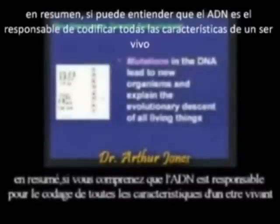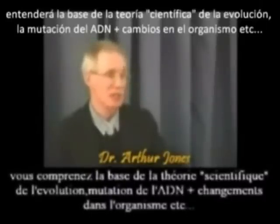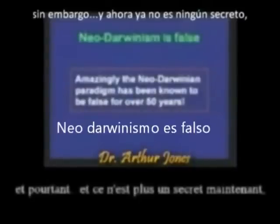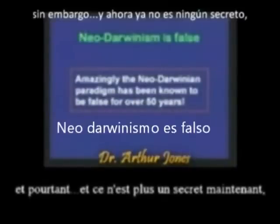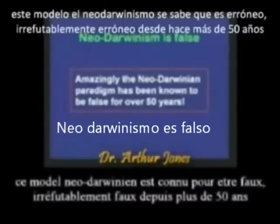Clearly, if you accept that DNA is responsible for coding all the characteristics of an organism — whether it's a recipe or a blueprint — then you've got the basis of a scientific theory of evolution. Changes in the DNA produce changes in the organisms. And yet, an unknown secret here: the Neo-Darwinian paradigm has been known to be false — unquestionably false, irrefutably false — for over 50 years.